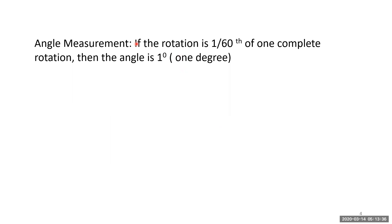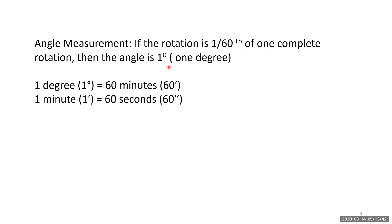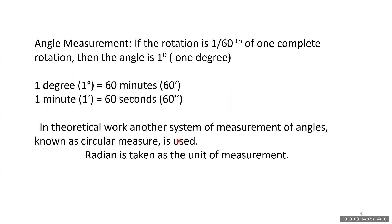For angle measurement, 1/360th of one complete rotation gives an angle of 1 degree. Note the superscript zero symbol denotes degrees; if theta is given without that symbol, it is in radians. One degree equals 60 minutes, and one minute equals 60 seconds. Another system of angle measurement is the circular measure, where the radian is taken as the unit.